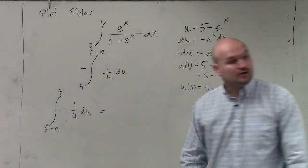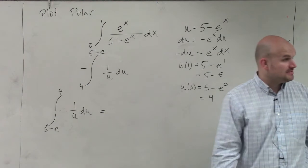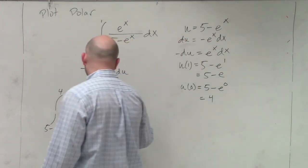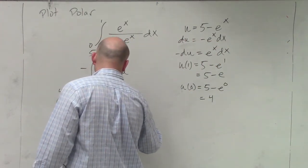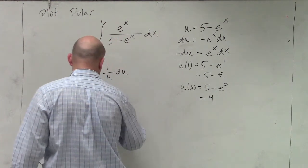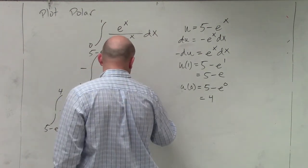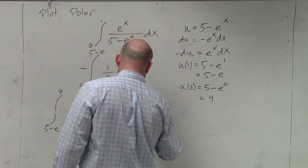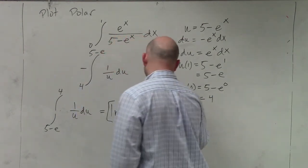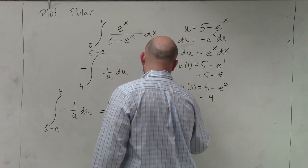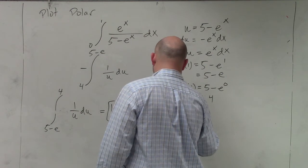So now, the integral of 1 over u is going to be ln of absolute value of u, and that's going to be from 4 to 5 minus e, which is going to equal to the ln of absolute value of 4 minus ln of absolute value of 5 minus e.